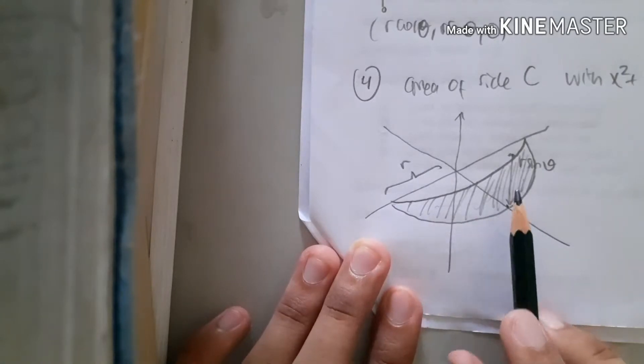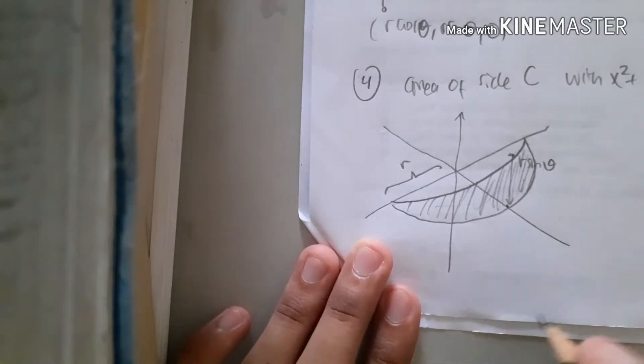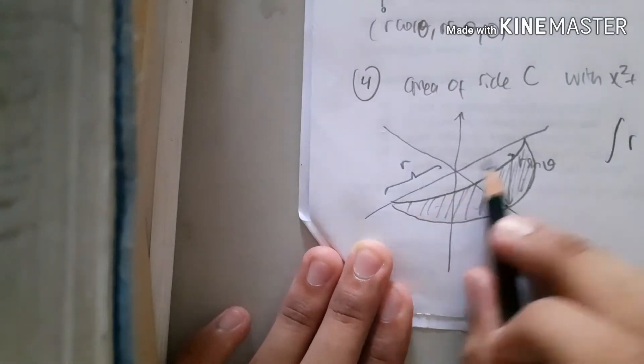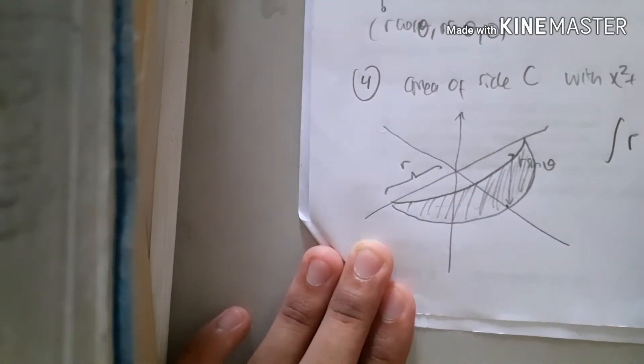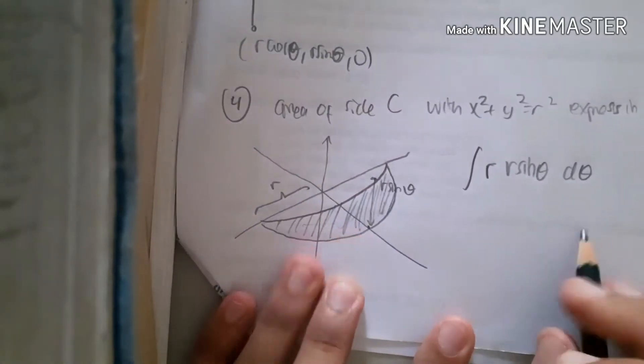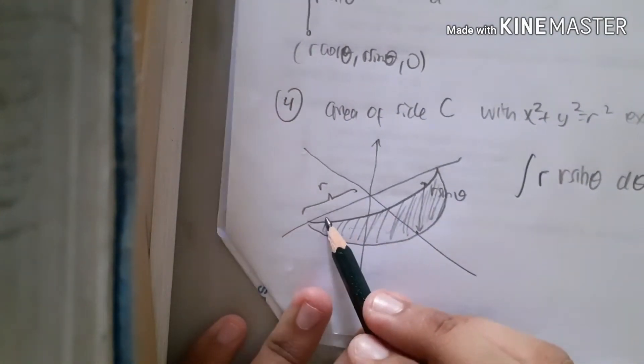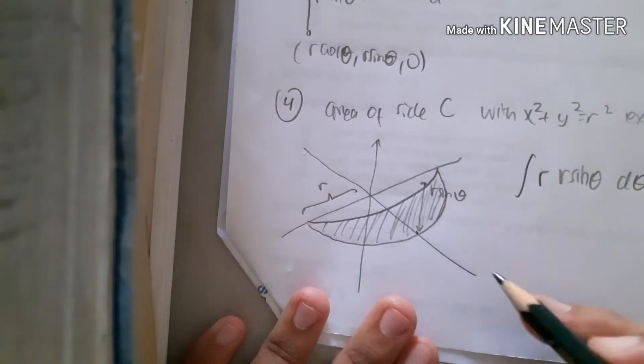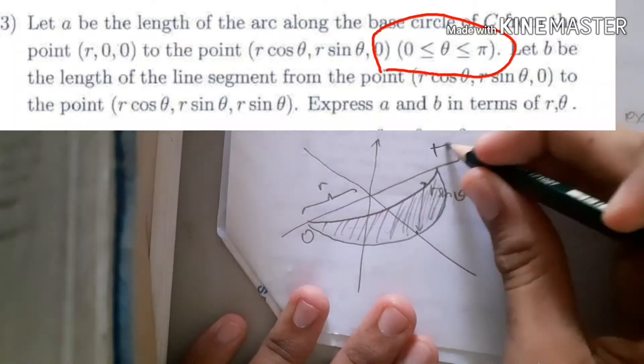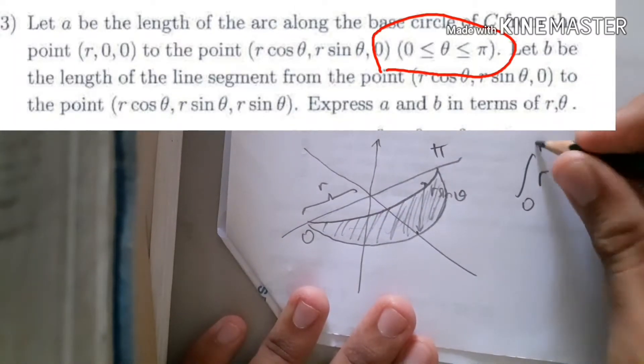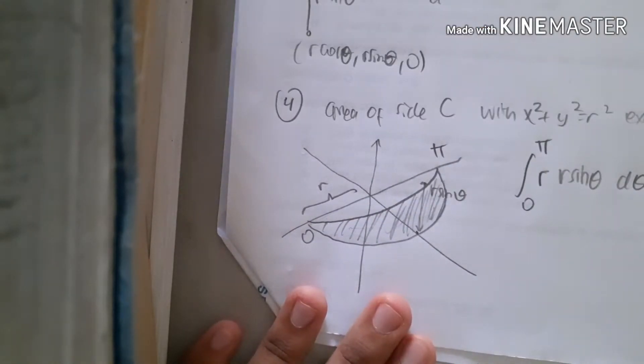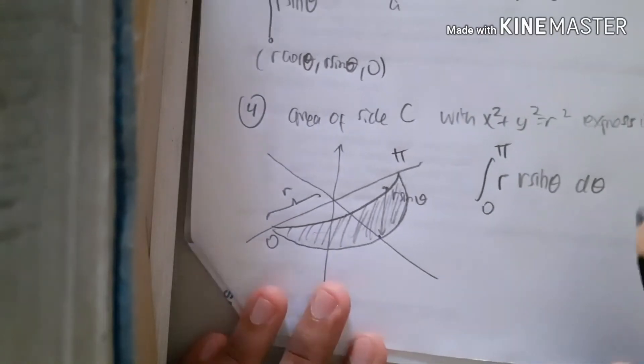This area now, and to do that, because this is a function, we use again integral. So R, the side, and also R sin θ and dθ. Okay, so this one. And how about the limit? Now we know that we draw from this side to that side, and we know from number three our interval is zero and π. So yeah, we only calculate that.